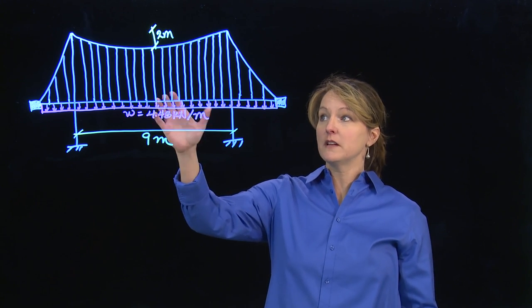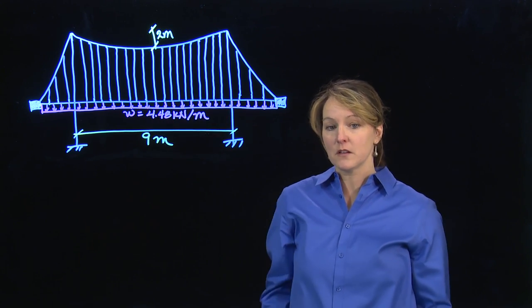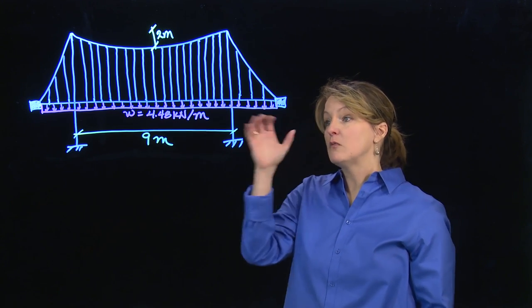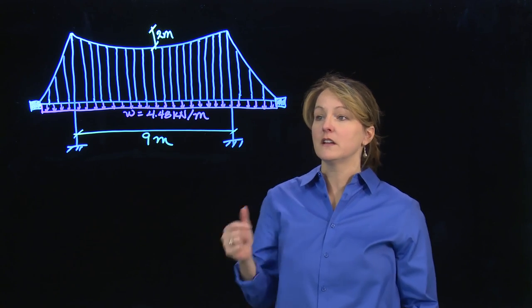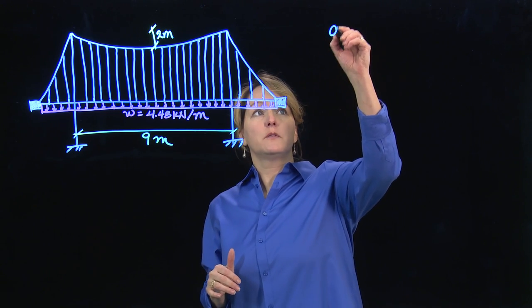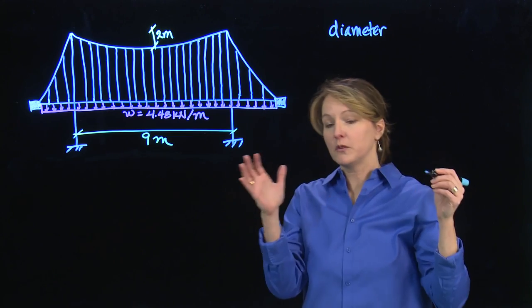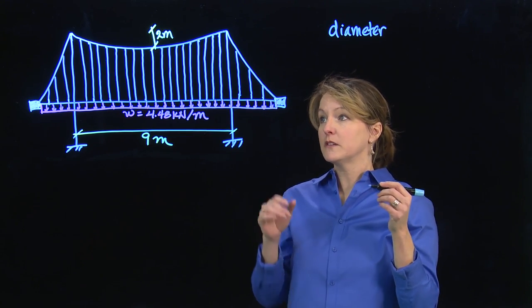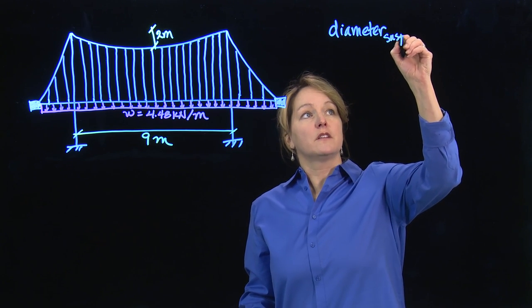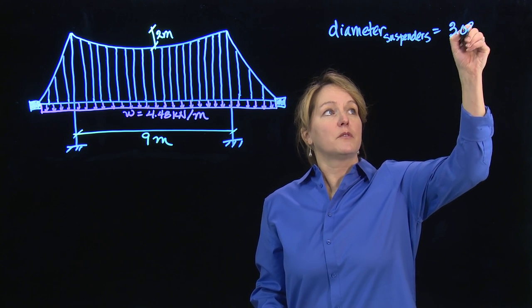So analyzing them is fairly straightforward. It's like what we've done previously, summing forces in the y-direction. We don't even have an angle that we have to deal with. So online we've posted all the steps to go through that. But the bottom line for those suspenders is that we have a certain diameter that's required, and I use the same allowable stress that I used for the cable stay bridge. But the diameter of those suspenders ends up being 3.03 millimeters.